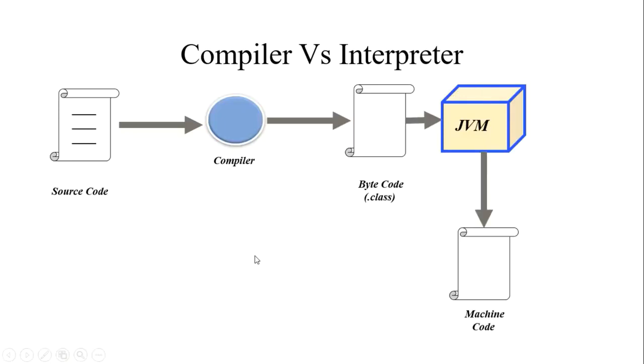Now, the question is, Java comes under which category? Either it is a compilation-based or interpretation-based programming language. To understand this, start from a source code. Say, this source code is written in Java. Therefore, the extension of this source code will be definitely .java. Say, the name of the file is A and the extension is .java.